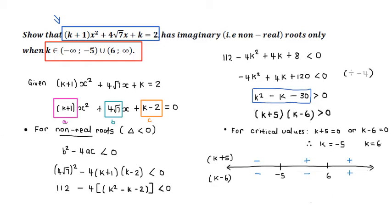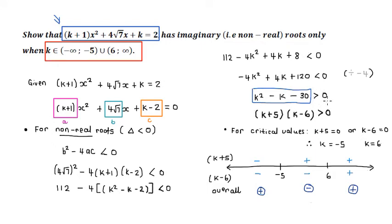We're not done, because this inequality came from the product of two brackets, so we need an overall sign from multiplying the two signs in each region. Negative times negative is positive; positive times negative is negative; positive times positive is positive. We are looking for where we have positive regions — greater than zero — which is region 1 and region 3. Starting from our critical values with open circles, we identify those positive regions on either side.